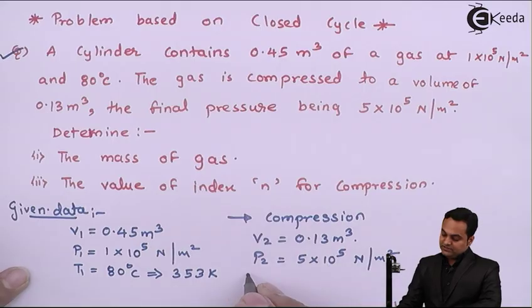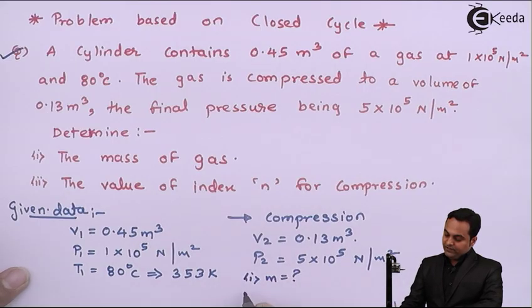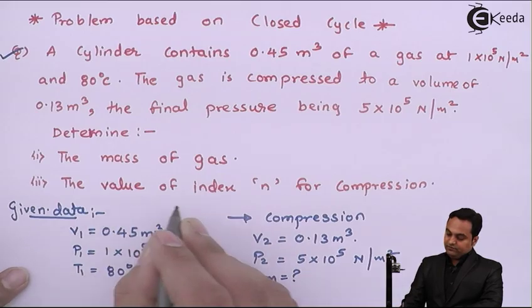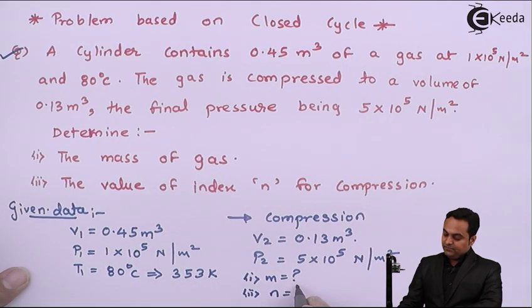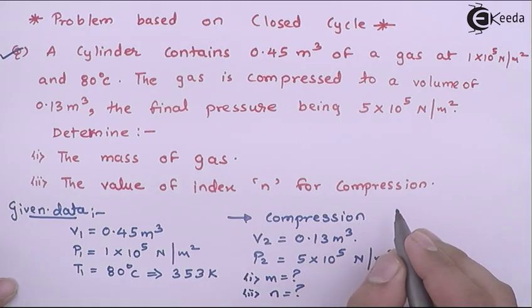and secondly we have to find the value of n for compression. This n is the polytropic index, so the compression given here is polytropic compression.